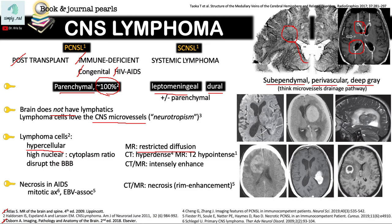This example shows a bright signal on DWI study. Another characteristic finding is that when you look at lymphoma cells under a microscope, they are small, round cells. If you look at the lymphoma cell, much of the mass is composed of the nucleus instead of the cytoplasm. This is what we call a high nuclear-to-cytoplasm ratio.